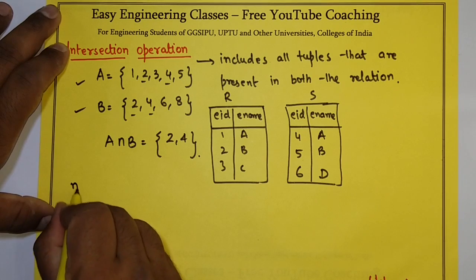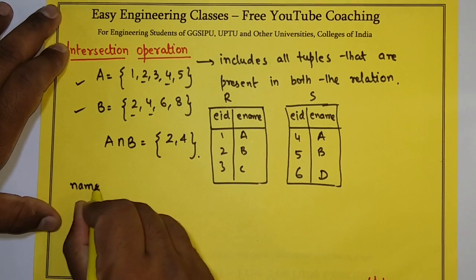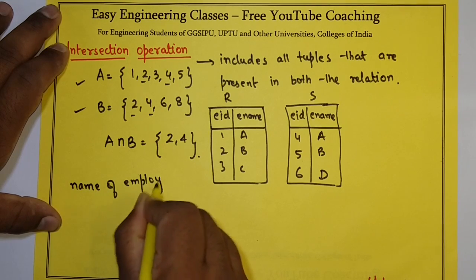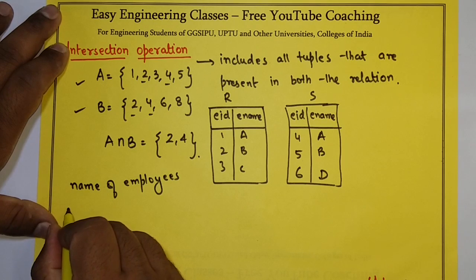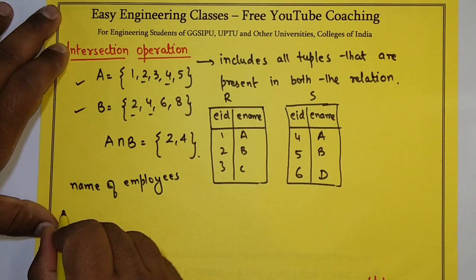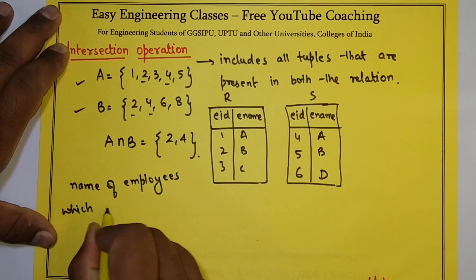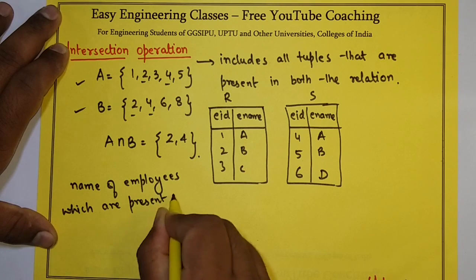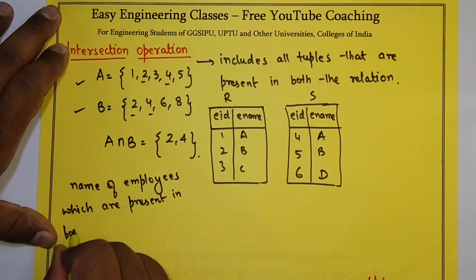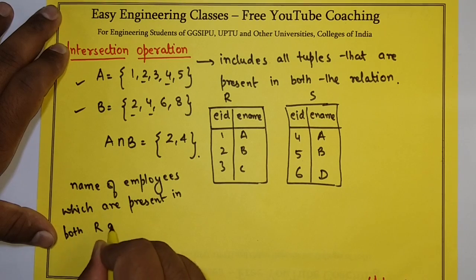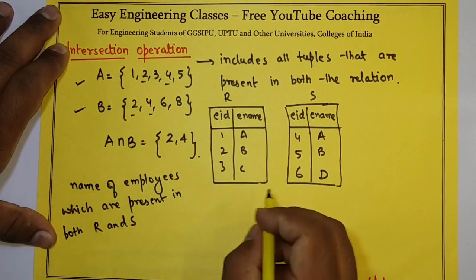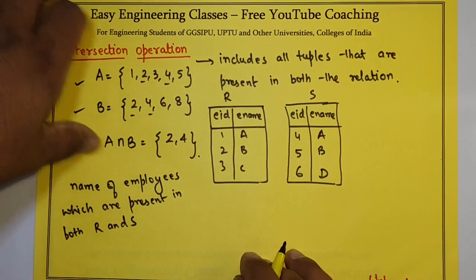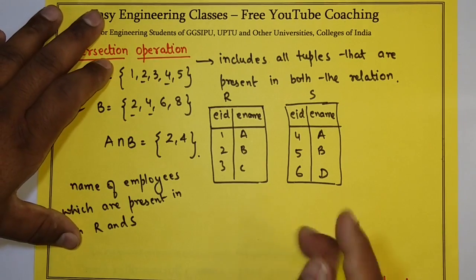Now, if I need to find the names of employees which are present in both R and S, how do we write this?